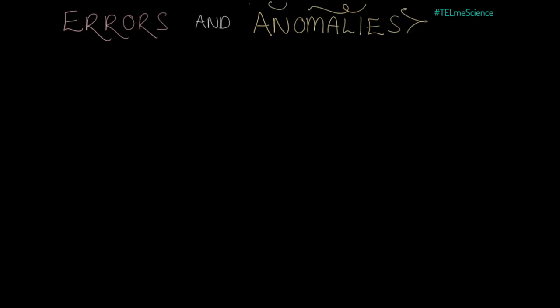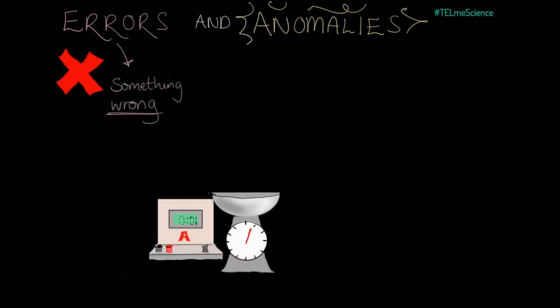In science, some words sound very similar. An error is something you've done wrong. There's a problem in your method, or perhaps a piece of equipment hasn't been calibrated properly, or perhaps something is varying randomly, like the volume of a liquid measured by eye with a measuring cylinder will vary slightly from the desired true value.